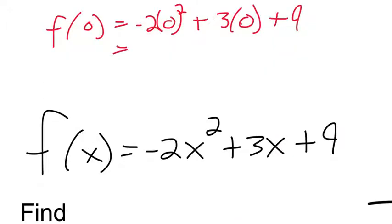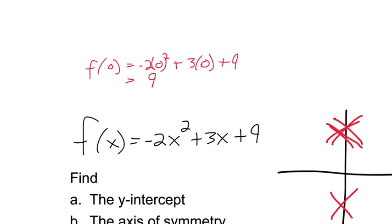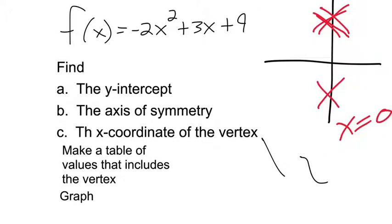And if you plug in 0 like I did up here in red, you get out 9. So the y-intercept where it's going to cross the y-axis is at 9.